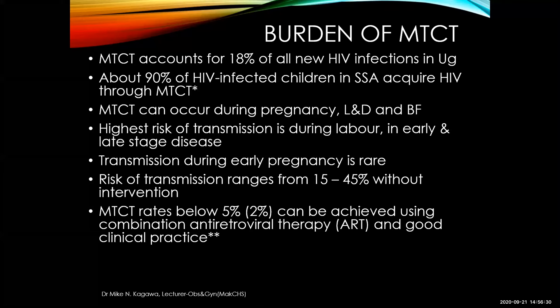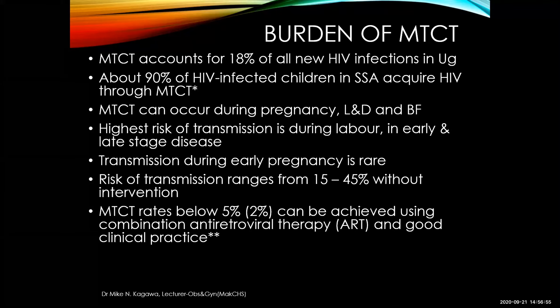In a population like ours, MTCT can be reduced to less than 5%, or even as low as 2% in populations that ordinarily do not breastfeed. On top of ARVs we give, we should encourage good clinical practice among health workers. Uganda's progress toward the 90-90-90 targets: as of 2019, we have reached 89% on the first 90 — 89% of all infected people are aware of their HIV status. Women are disproportionately affected: 8% of adult women have HIV compared to 4.3% of the male reproductive age group. The latest seroprevalence gives a prevalence of 6 to 15 out of 100 pregnant women being infected with HIV, depending on region.